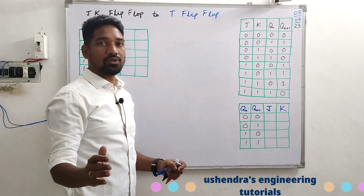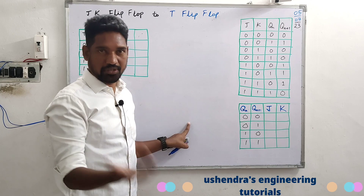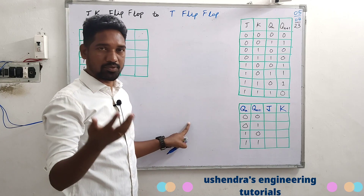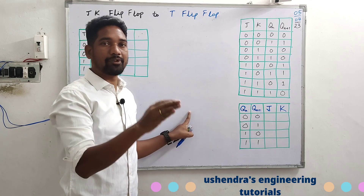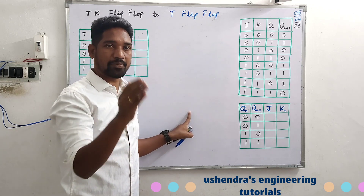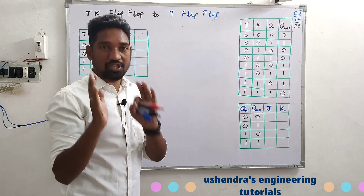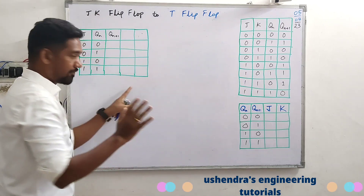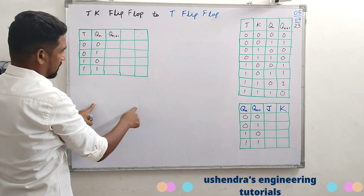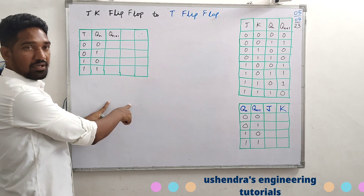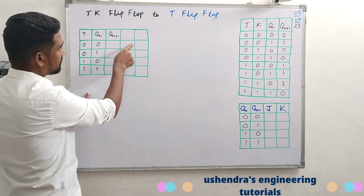Hi, flip-flop conversion — JK to T flip-flop is an important exam point. As a beginner, given a flip-flop and a required flip-flop, this is an important topic and a game-changer. In flip-flop conversion, the first step is table form construction — the truth table of the required flip-flop, followed by the excitation table of the given flip-flop.